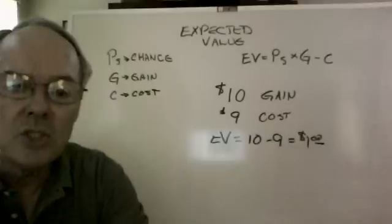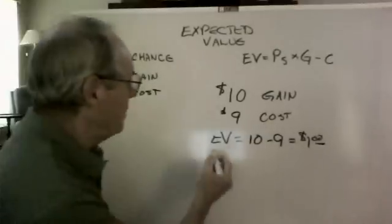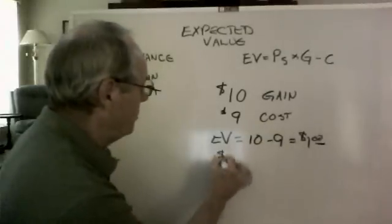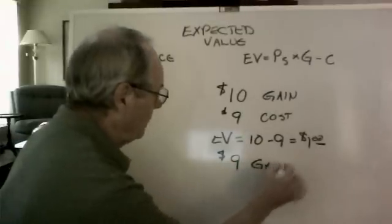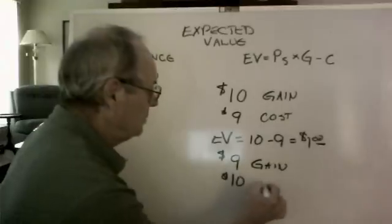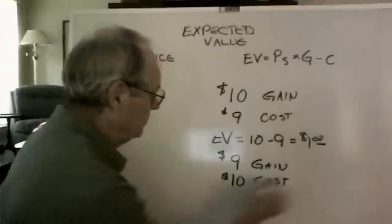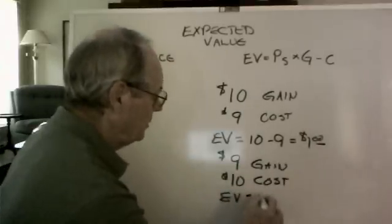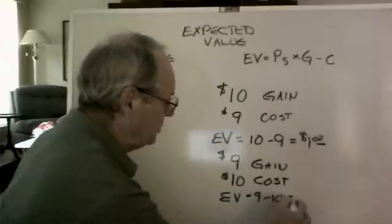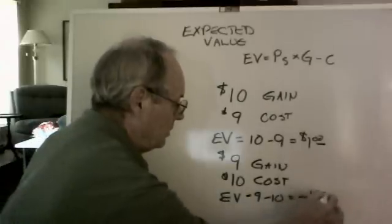Well, what happens if I suggested that it was the other way around? That I'm going to give you $9 gain, but the cost is going to be $10. Now let's look at the EV equals $9 minus $10, which equals minus $1.